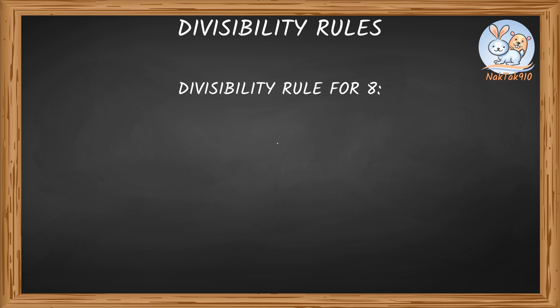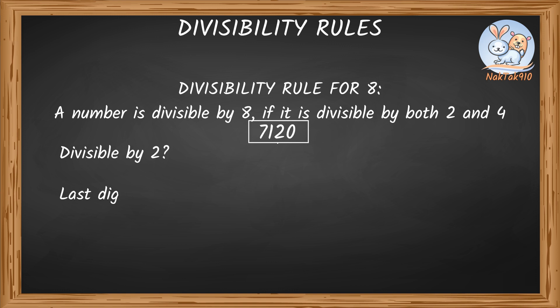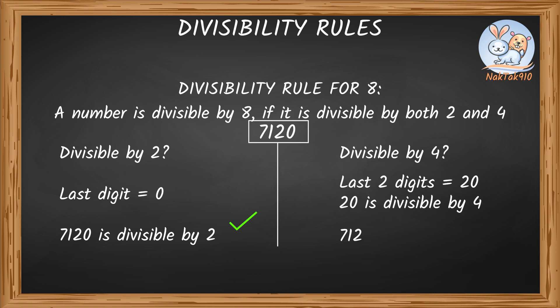Let's look at the divisibility rule for 8. A number is divisible by 8 if it's divisible by both 2 and 4. Let's see if 7,120 is divisible by 8. The last digit is 0, so 7,120 is divisible by 2. The last two digits are 20, and 20 is divisible by 4. Since 7,120 is divisible by both 2 and 4, it's also divisible by 8.